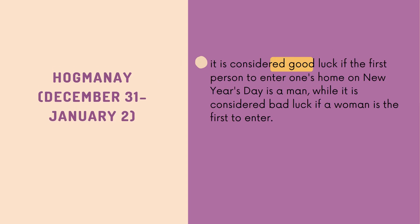In Scotland, Hogmanay runs from December 31st to January 2nd. The New Year celebration can last through January 2nd, which is considered a bank holiday. It's considered good luck if the first person to enter one's home on New Year's Day is a man — a tradition known as first footing, where a male friend enters a home and usually gives a small ceremonial gift.